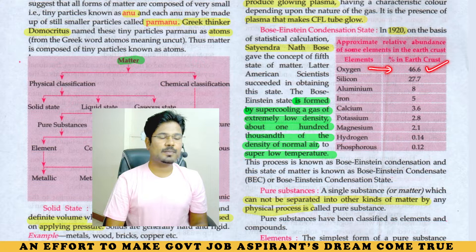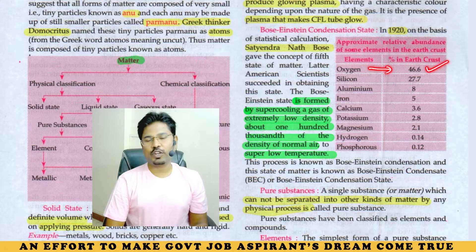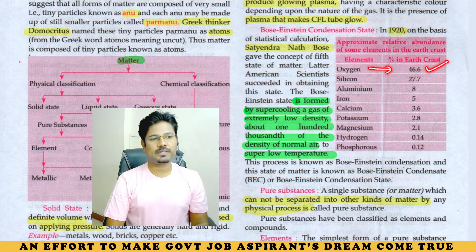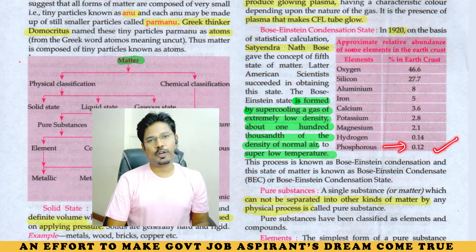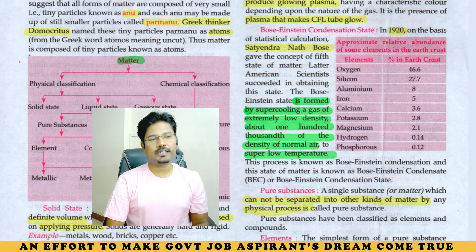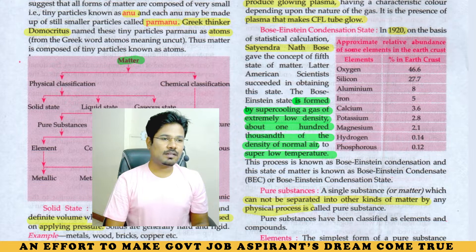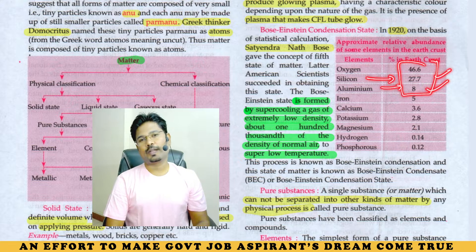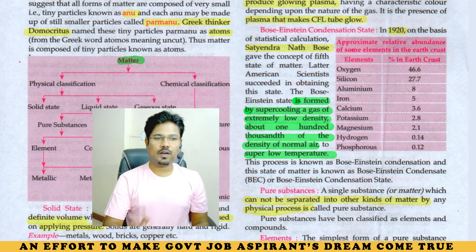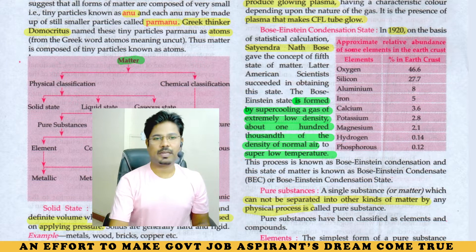Oxygen is the highest abundant element at 46.6%. The least element is phosphorus at 0.12%. The order is oxygen, silicon, aluminum — those are the first three.